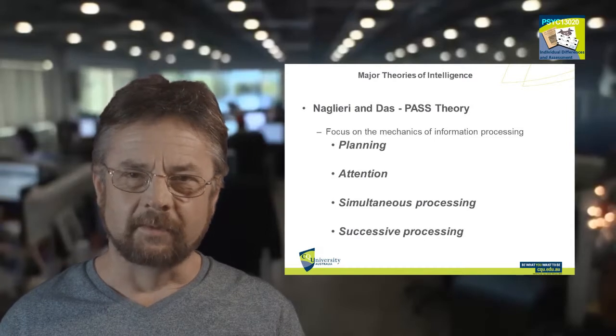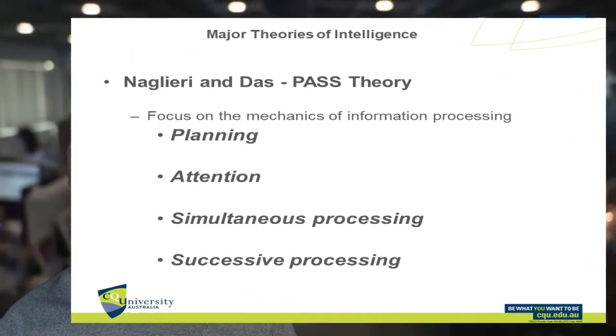Ready for a few more theories of intelligence? There's Naglieri and Das. Whereas previous theories were focused on abilities, Naglieri and Das focused on processes and came up with a cognitive assessment scheme as an alternative to existing IQ tests. Their system is based on an information processing framework, and their work began in the 1970s when cognitive psychology shifted the focus from what people do to how people think. Psychology started to model itself on incoming technology — computers — and the human mind started to be viewed as an information processing unit.